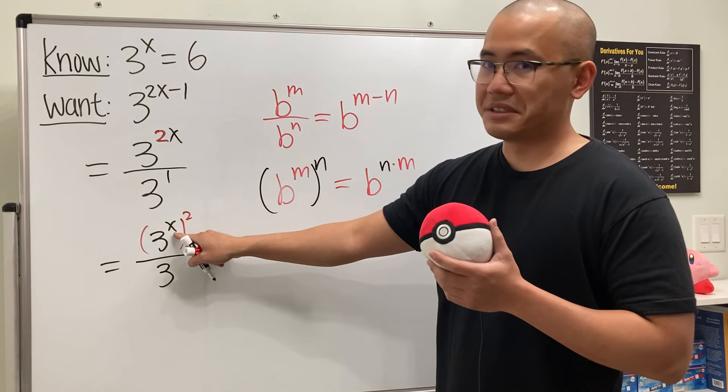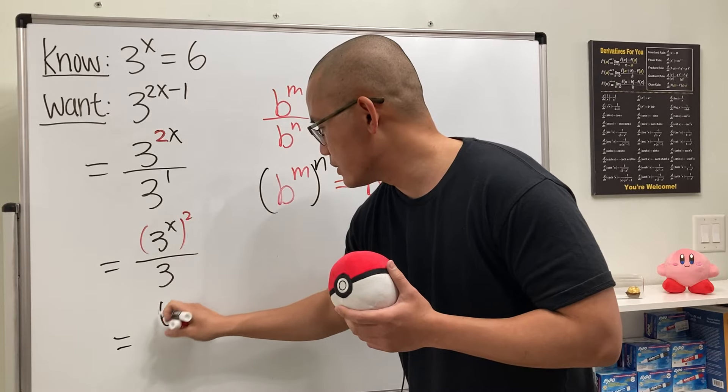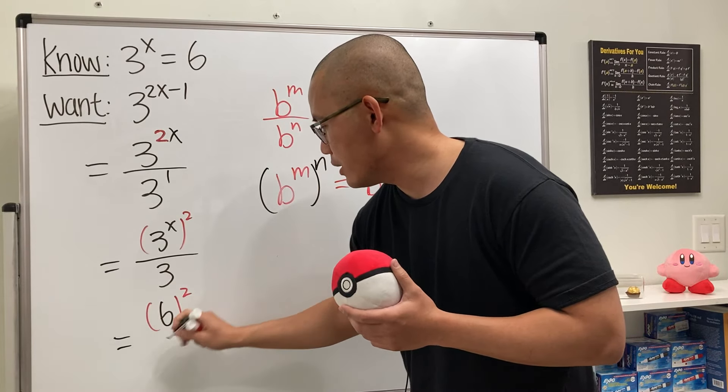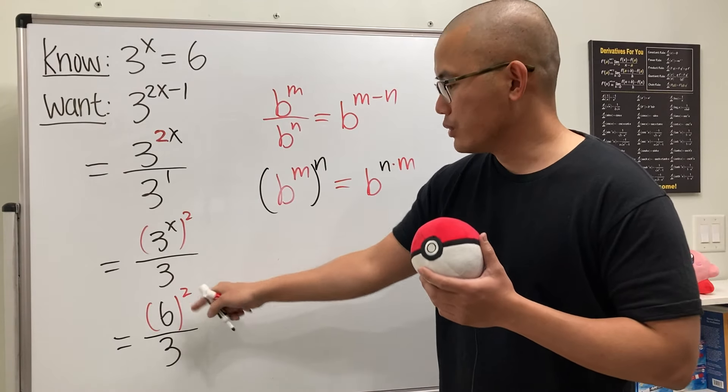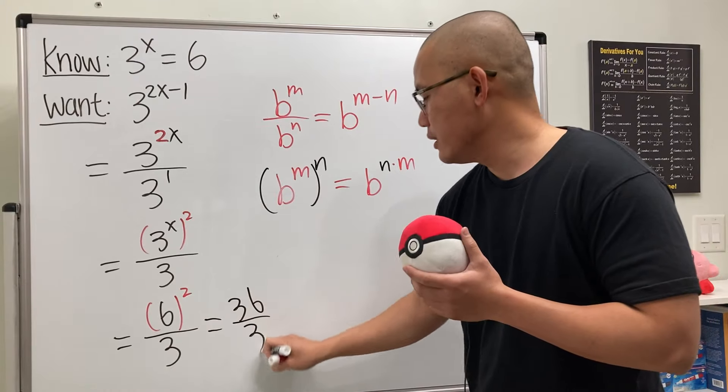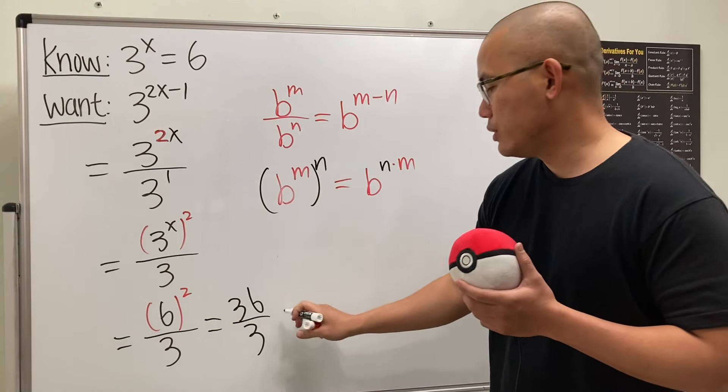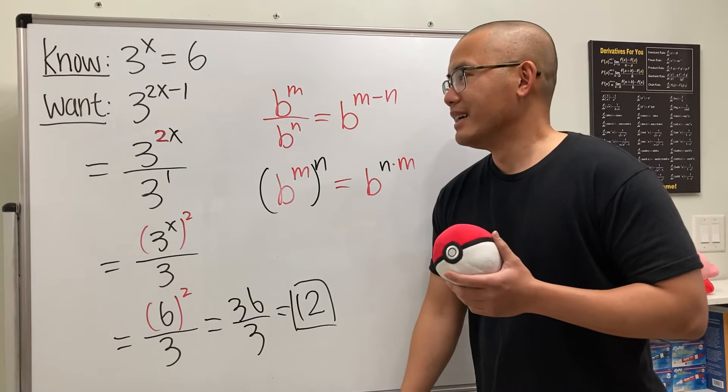Well, 3 to the x is given to be 6. So, in fact, this is just 6 to the 2nd power over 3, and then we can just work that out. Do the exponent first, which is 36, and then divide it by 3. 36 divided by 3. Reduce that, we get 12.